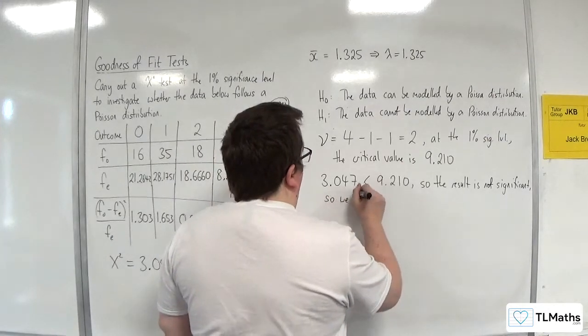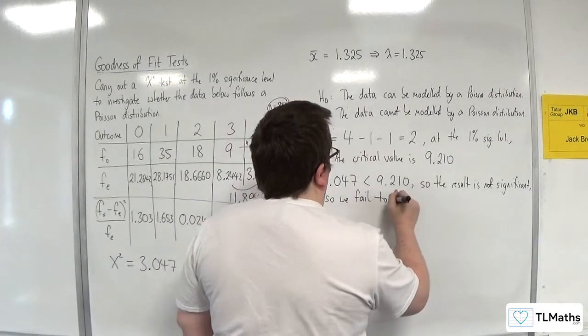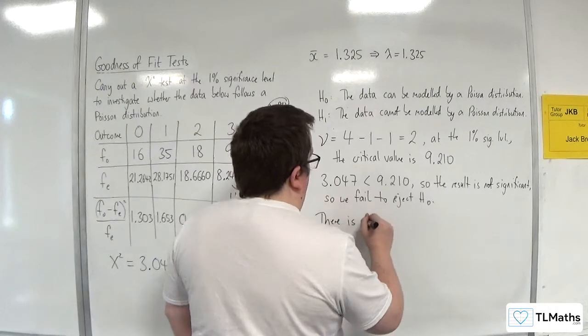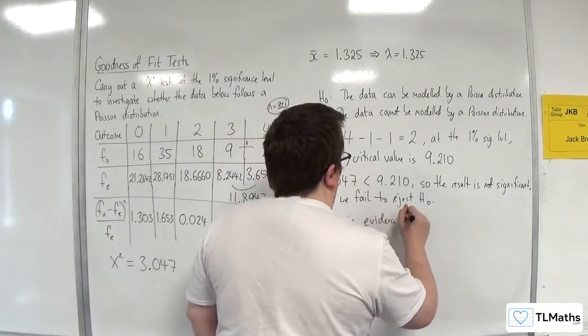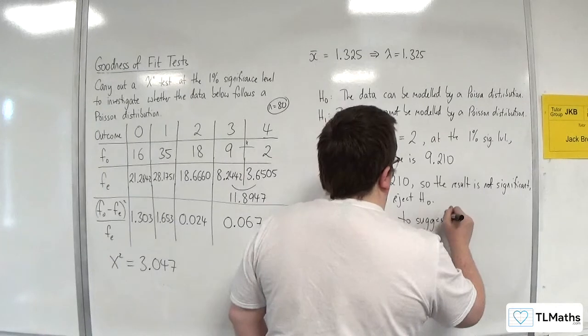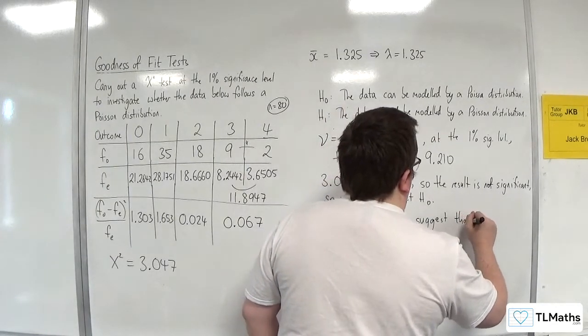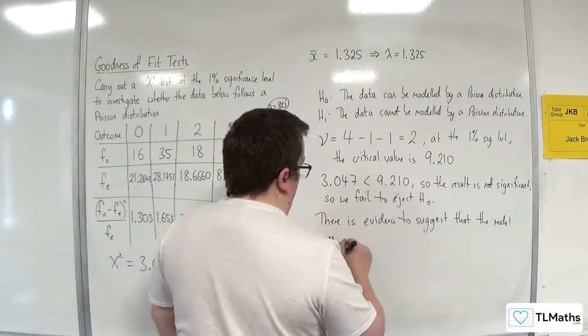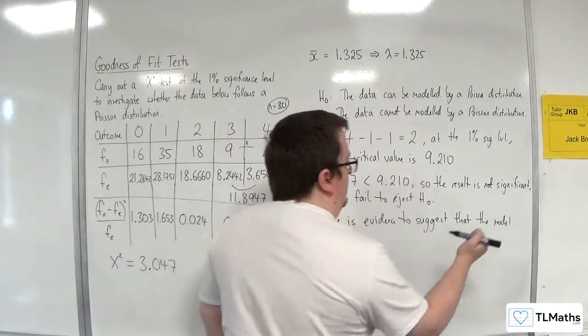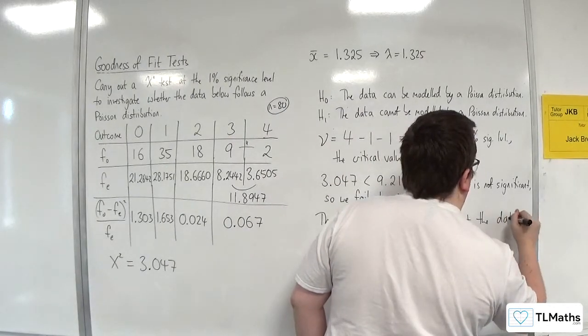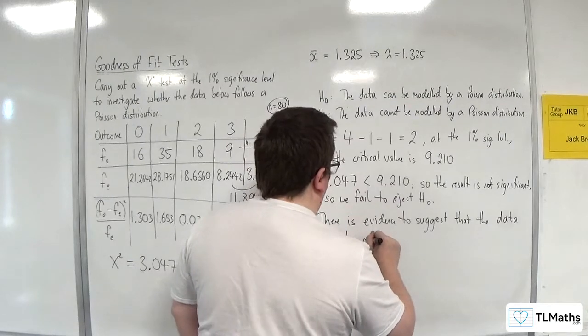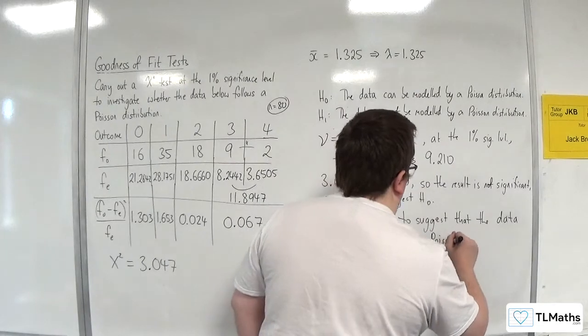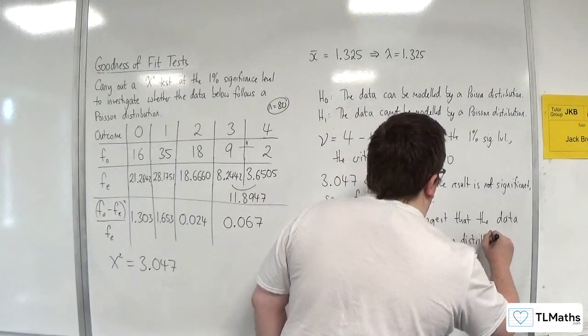So we fail to reject H0. There is evidence to suggest that the data can be modelled by a Poisson distribution.